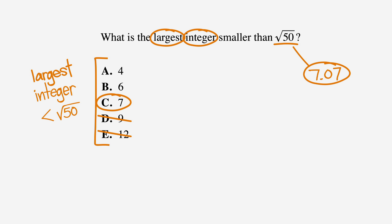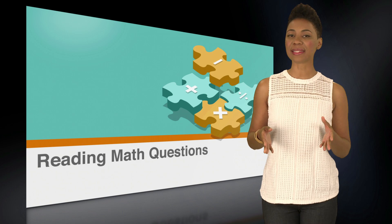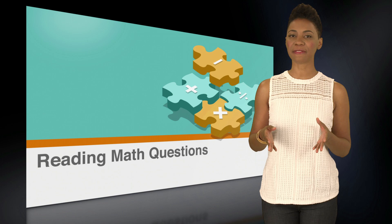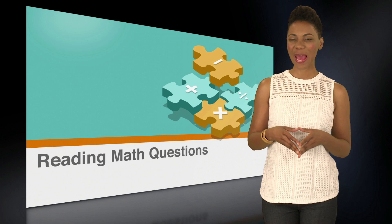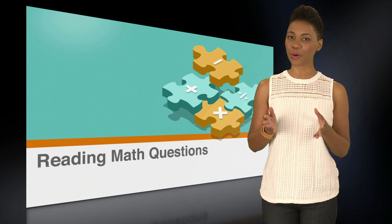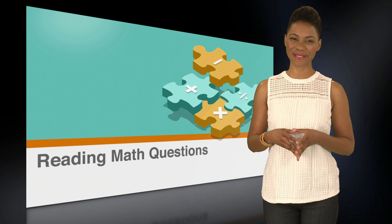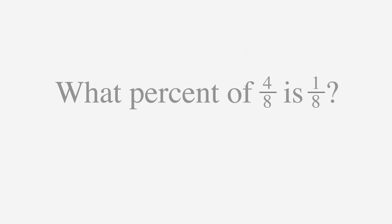Another method for reading the question is to separate the chunks of facts given in the question. You can use vertical lines to group the facts and make them stand out. Let's look at an example: What percent of 4 eighths is 1 eighth?